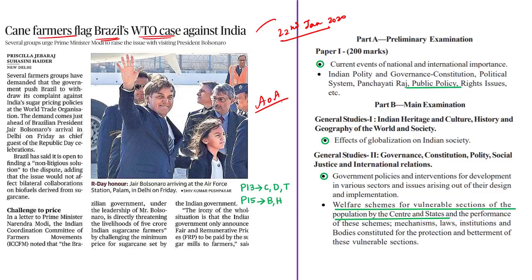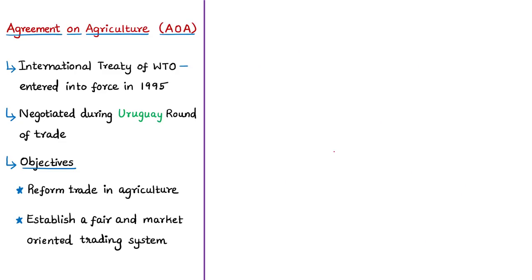Let us discuss the Agreement on Agriculture. The Agreement on Agriculture is an international treaty of the World Trade Organization. It is one of many agreements negotiated during the Uruguay Round of trade negotiations of the General Agreement on Tariffs and Trade (GATT). When the WTO replaced GATT in 1995, the Agreement on Agriculture came into force. It aims to reform trade in agriculture across the world by establishing a fair and market-oriented trading system.